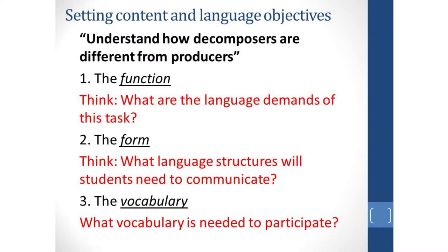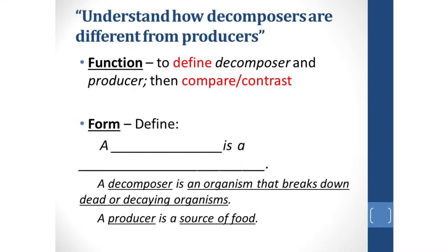So let's take a look at what the teacher would do with this content objective. The function is to define decomposer and producer, and then later they're going to compare and contrast the two. So defining would look like this: A something is a something. A decomposer is an organism that breaks down dead or decaying organisms. A producer is a source of food. Students are using the academic vocabulary: decomposer, producer, organism, decaying, source. So already you can see the number of words that students are going to need to know.